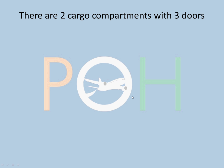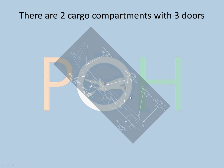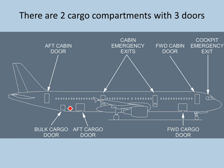There are two cargo compartments with three doors: the bulk cargo door, aft cargo door, and forward cargo door. The bulk cargo door can be opened from both the inside and outside, whereas the aft and forward doors can only be opened from the outside. The bulk cargo door is relatively smaller in size, but the compartment itself is the same.